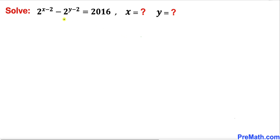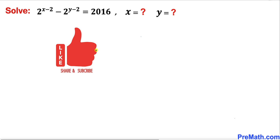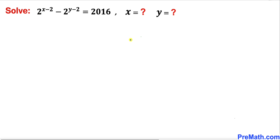Welcome to pre-math. In this video we are going to solve this given exponential equation: 2 power (x minus 2) minus 2 power (y minus 2) equals 2016. Please don't forget to give a thumbs up and subscribe. Let's go ahead and get started with the solution.